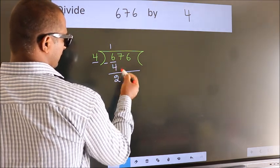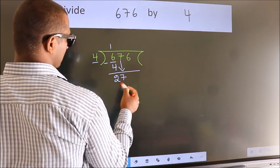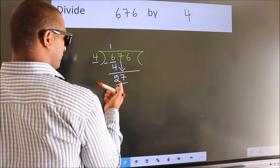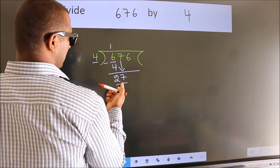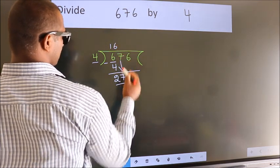After this, bring down the beside number. So, 7 down. So, 27. A number close to 27 in 4 table is 4 6 24.